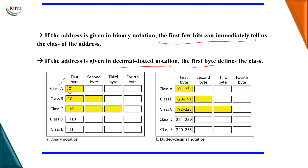For class B, if the first two bits are '1 0', it is a class B address. In dotted decimal notation, a first byte between 128 and 191 indicates class B. For class C, if the first three bits are '1 1 0', it is class C; in decimal, the range is 192 to 223. For class D, the first four bits are '1 1 1 0', with a decimal range of 224 to 239. For class E, the first four bits are all ones, with a decimal range of 240 to 255.